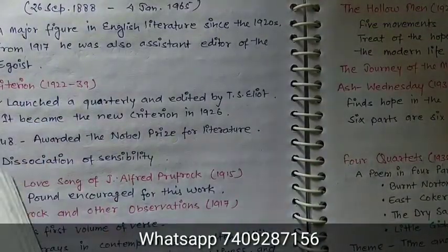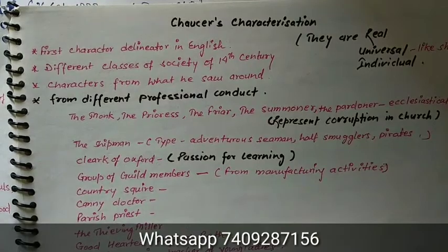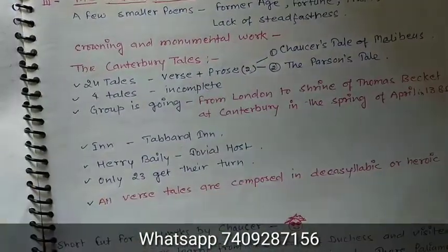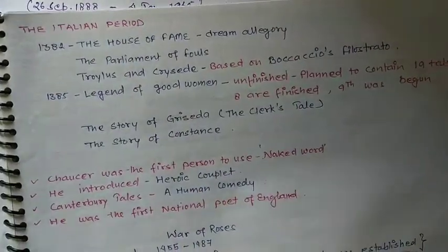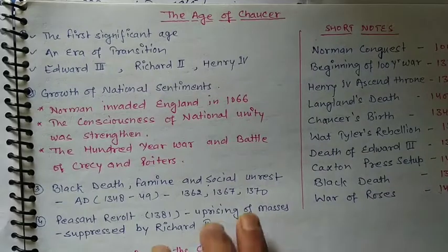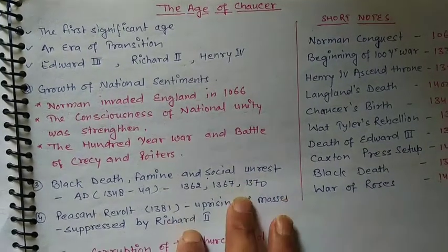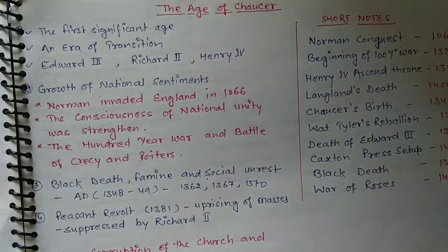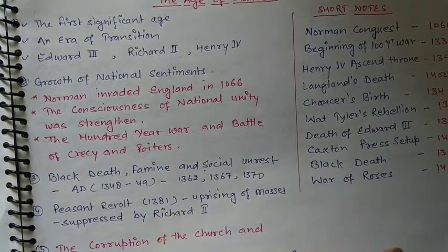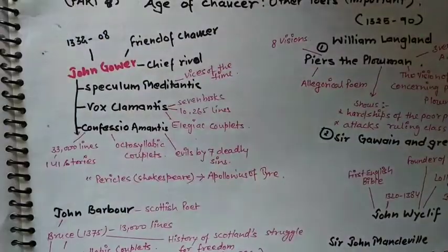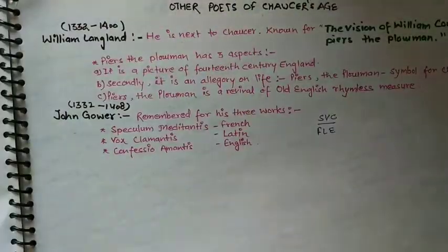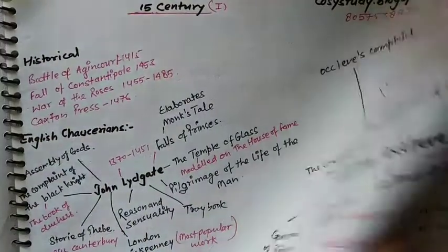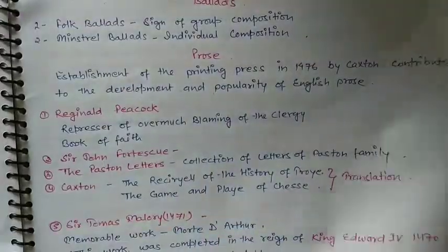You will find Geoffrey Chaucer's characterization in the notes. Let me show you one section — the English period, then the Italian period. You can see poetry in Chaucer's age. I tried my best to incorporate all the details of the age, including social impact, social influence, and social structure. Then, for all ages, you will have mind maps for the works and other poets of Chaucer's age. This covers the 15th century.